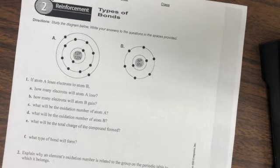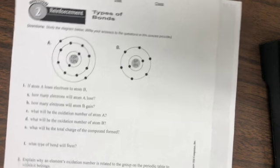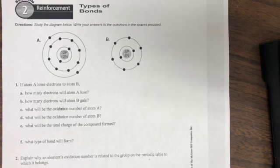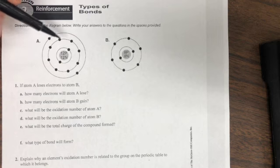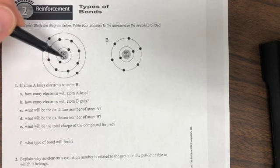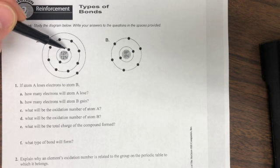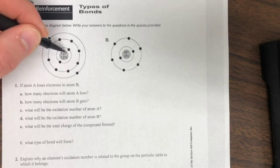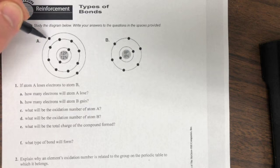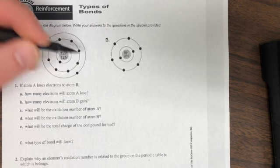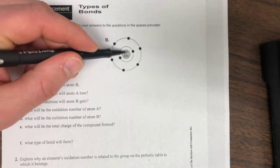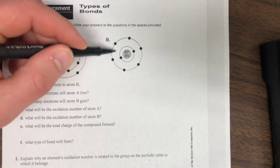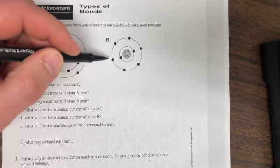Okay, we're going to talk about worksheet 18-2 right here. You've got pictures of two different atoms. This one has 12 protons, 12 neutrons, and 12 electrons - two in the first ring, eight in the second ring, two in the outside ring. Letter B here: eight protons, eight neutrons, eight electrons, but six on the outside.